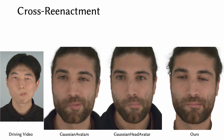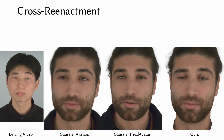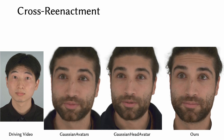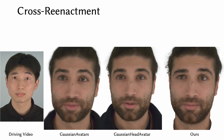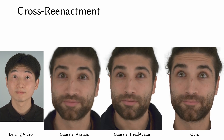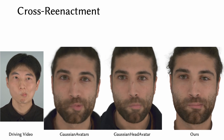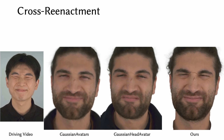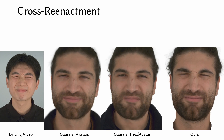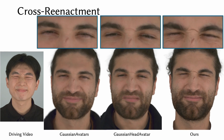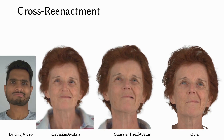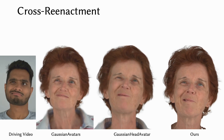Next, we show cross-reenactment results by transferring tracked expression codes from a driving sequence to our avatars. Compared to self-reenactment, the findings of our cross-reenactments are similar, indicating that all methods preserve disentanglement between identity and expression.